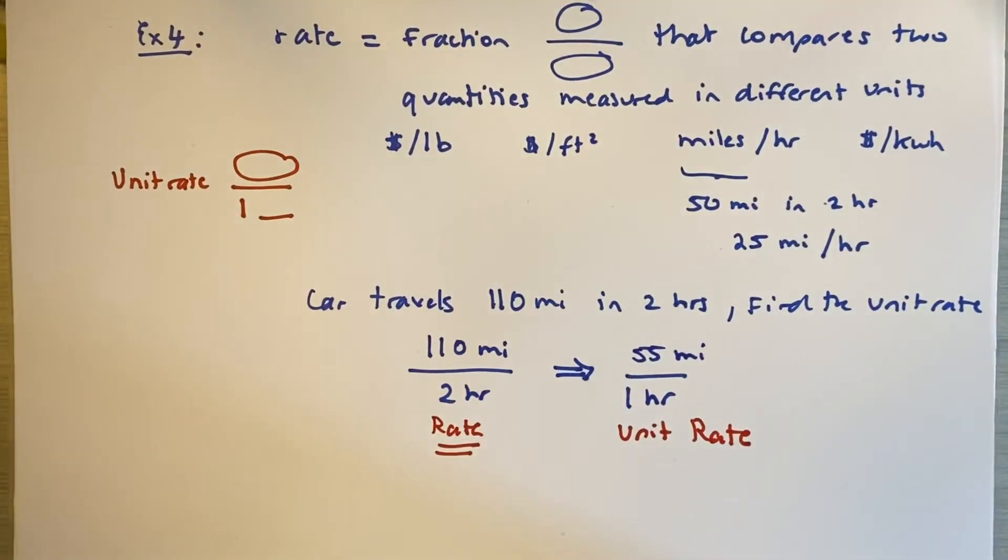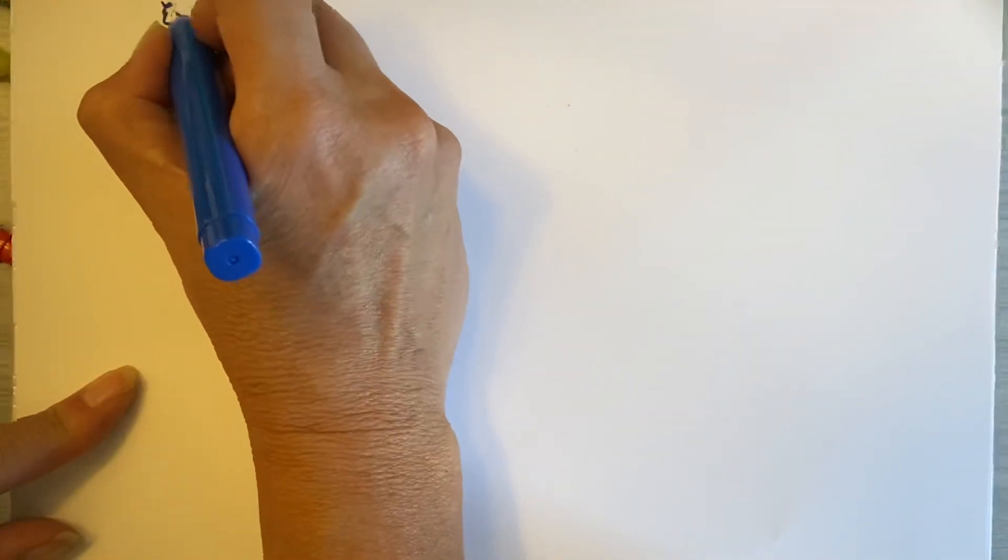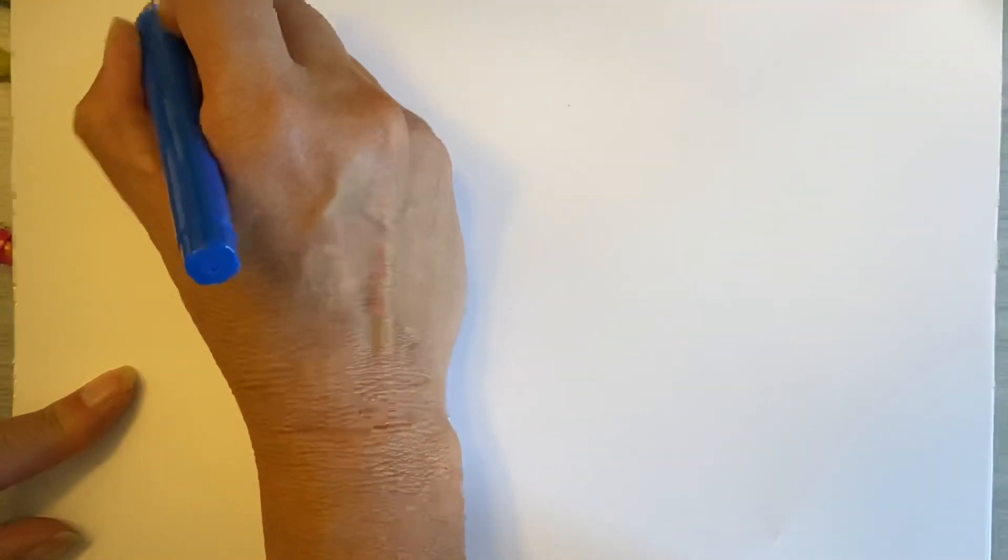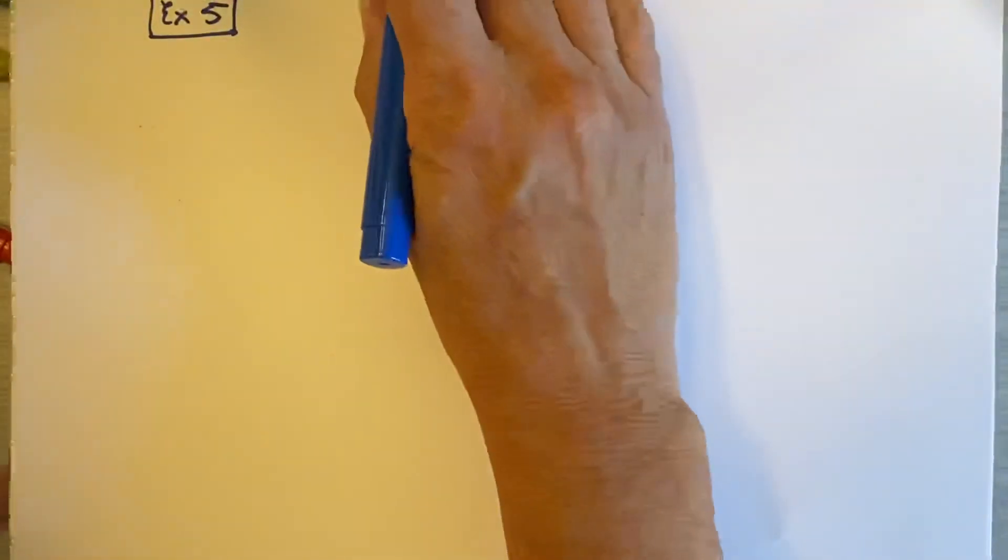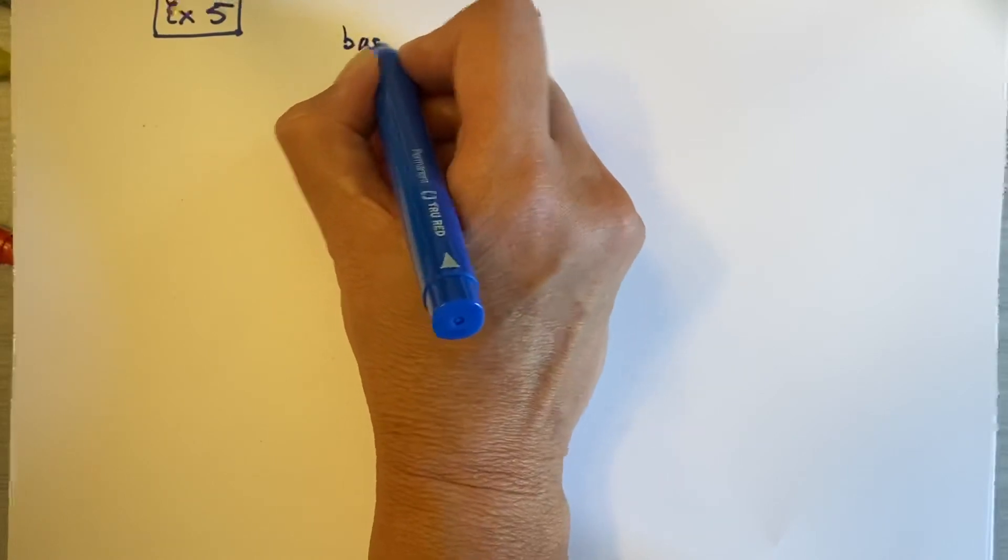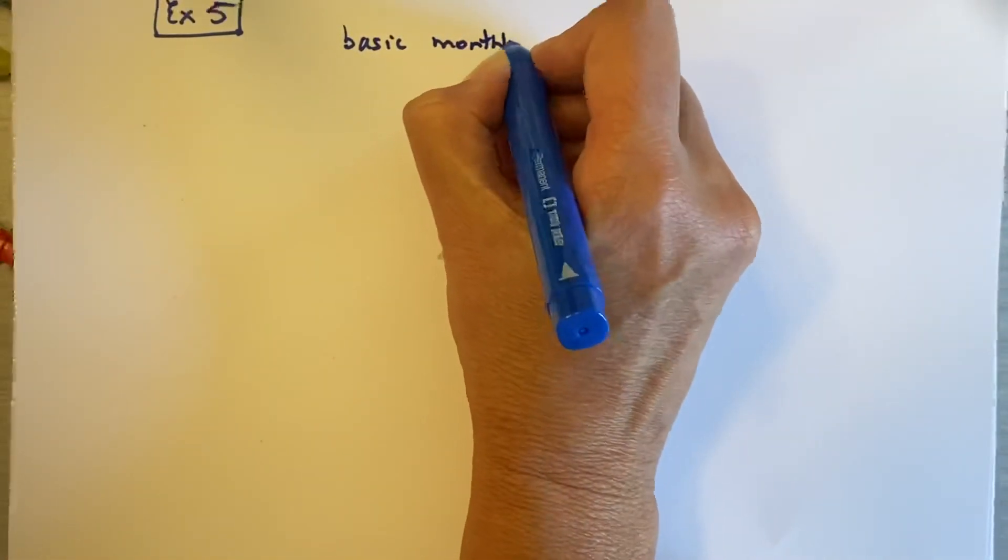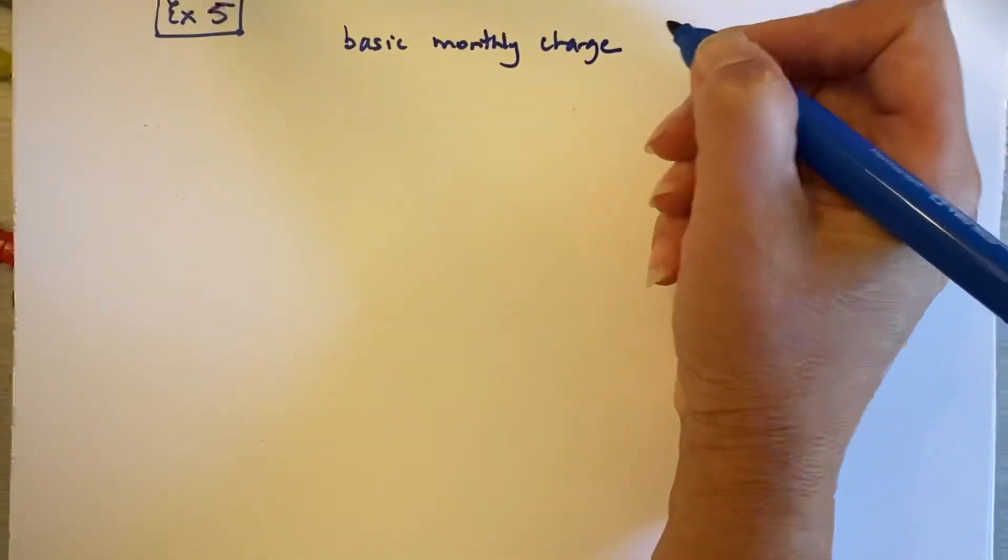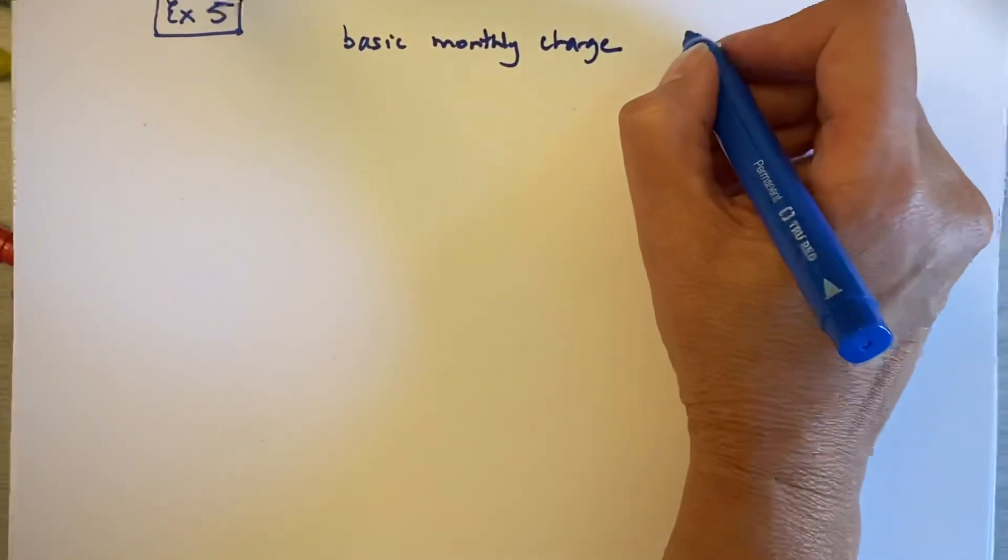And again, these are all different pieces that you're going to need as we do word problems. Last is a multi-step problem. And for me to do this with you, you're going to have to pretend you are living in the, I'm guessing in the 90s when this book was made. Because the information in here, and at times, especially where cell phones and internet is a little dated. So in the old days, when you got a cell phone, and actually there are probably still some plans something like that. But you had a basic monthly charge.